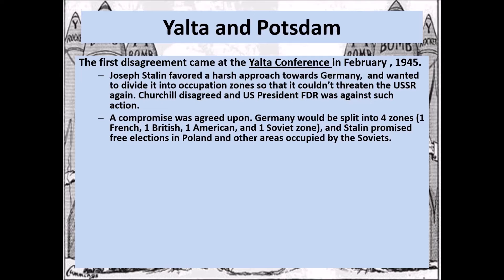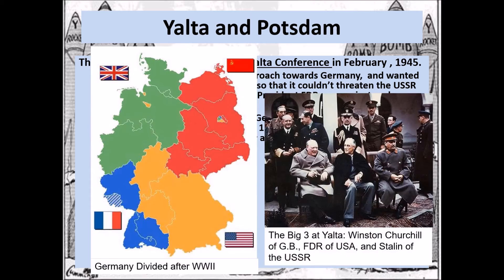Here you can see a map of Germany showing how it would be divided: green represents British territory, blue represents French territory, orange represents U.S. territory, and red represents Soviet territory. Embedded within Soviet territory is the city of Berlin, which is multicolored — that's very significant. Here's a picture of the Big Three: Churchill, FDR, and Stalin, from left to right.